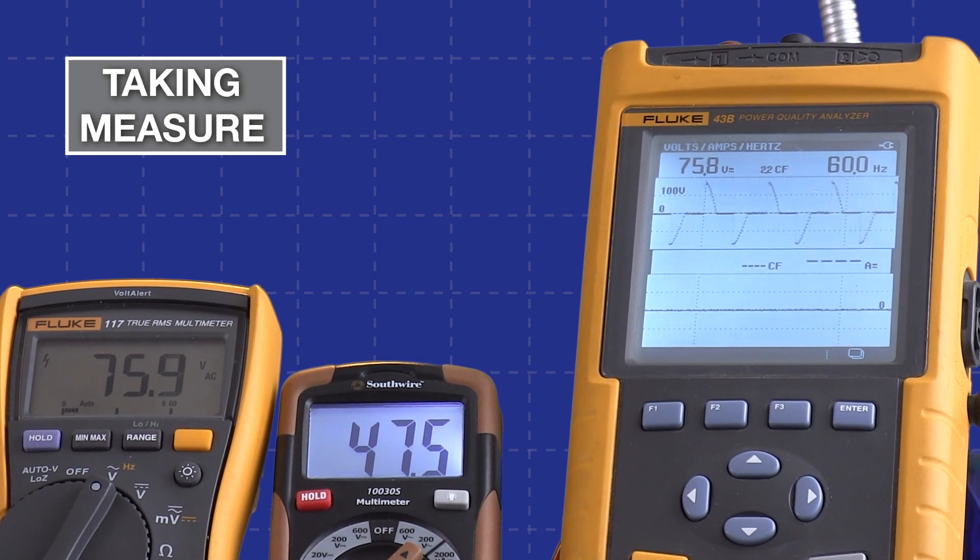The answer is pretty simple: the two Fluke meters are both true RMS meters, and they simply sample more of the sine wave more often and will give an accurate measurement even when you have altered sine waves. The Southwire meter is what's called an averaging meter, and it does not sample the sine wave in the same way and it will not give you an accurate measurement when you're dealing with any kind of an altered sine wave. There are lots of things in the electrical world that do alter the sine wave, so if you're working with AC circuits which may have some kind of a poor or manipulated sine wave, you need a true RMS meter to get both current and voltage measurements accurately.